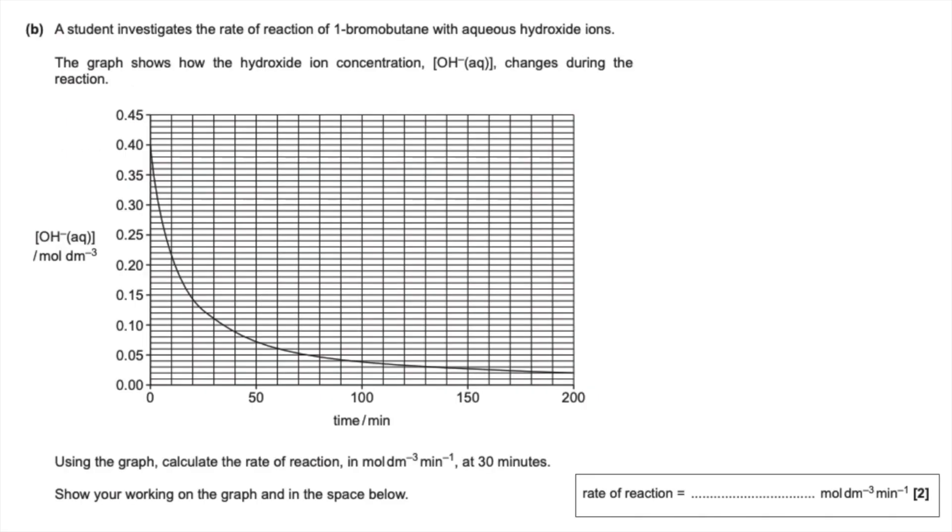The final part of the question, we've got to calculate the rate of reaction at 30 minutes. We're going to draw a tangent to the curve that hits the curve at 30 minutes. A common mistake I see is a student will literally just read off the Y value at 30 minutes and the X value, and divide those. That's not how you calculate rate - it's the change in Y, the change in concentration, divided by the change in time, the change in X.